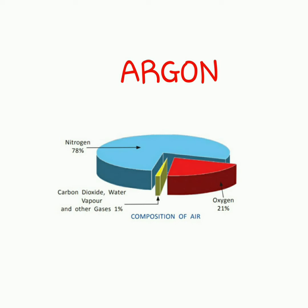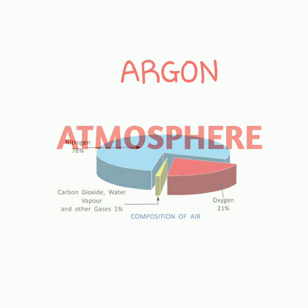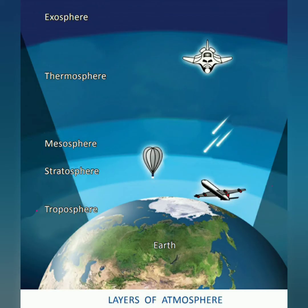Argon is another gas. It is used in making bulbs and fluorescent tubes. Now let's learn about the atmosphere. The earth is surrounded by a blanket of air, and this blanket of air around the earth is called the atmosphere. The atmosphere is held by the earth's gravity, and it can be divided into five layers.